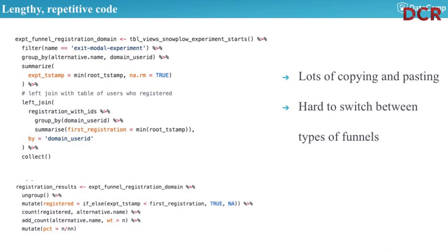When I was doing all of this, I had very lengthy, repetitive code — doing left joins, summarizing to get the first registration, computing ad counts, percentages, etc. It was hard to switch back and forth: if I wanted the first event followed by the next one, or to do it within a time period, I'd be redoing a lot of code. There was lots of copying and pasting, which as coders we know can lead to mistakes, and it was hard to switch between different types of funnels.